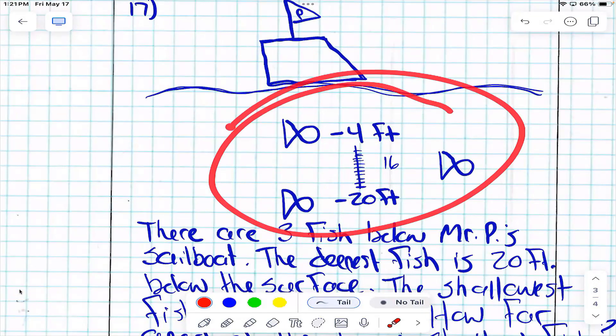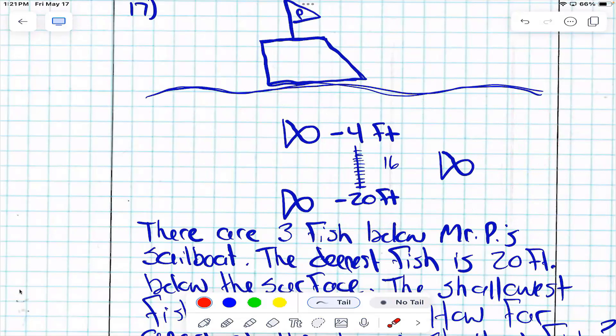Fish. Are fish a negative distance below—I'm sorry, are fish below sea level? Yes. So we technically say they're at like a negative, like a depth that is negative, right? Yes. But can they be a negative distance apart? No. Can anything be a negative distance apart? No.